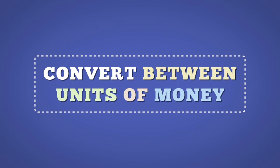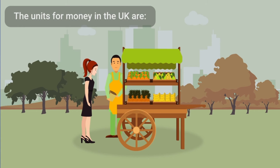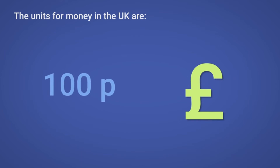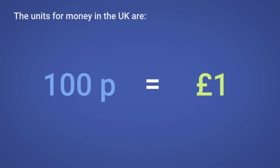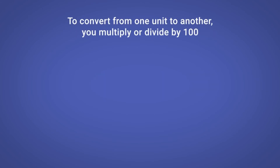Convert between units of money. Money is often used to buy goods. The units for money in the UK are pence and pounds. One hundred pence is equivalent to one pound. You never have pounds and pence signs together. To convert from one unit to another, you multiply or divide by 100.